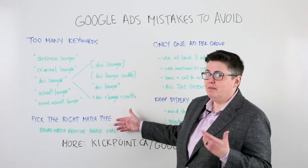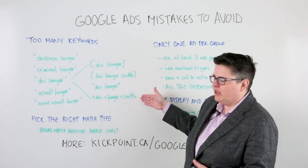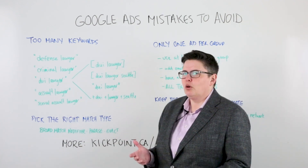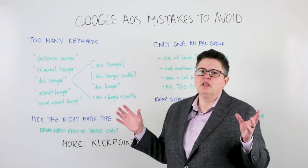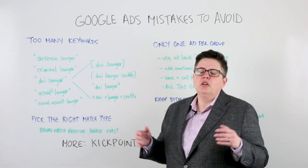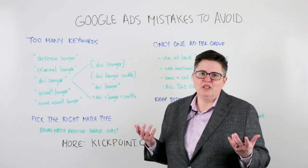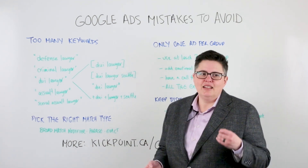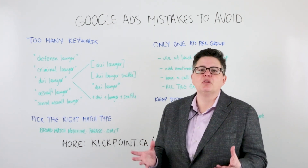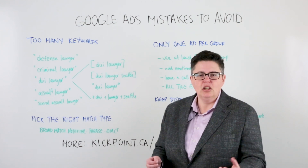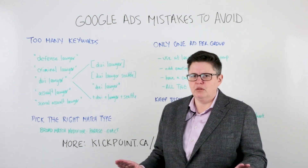The next thing is picking the right match type. You can see the bracket notation, phrase notation, and plus signs here. There are really four match types. There's broad match, which is terrible — don't ever use it. Broad match is just you writing out the keyword and then Google displays your ad for whatever it feels is relevant to that search. For example, a catering company with 'catering' as a keyword ends up showing for phrases where they can't provide catering — like a venue that only does in-house catering, or a catering conference. Do not use broad match.